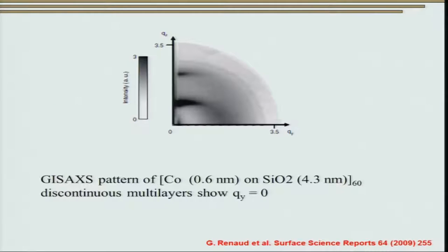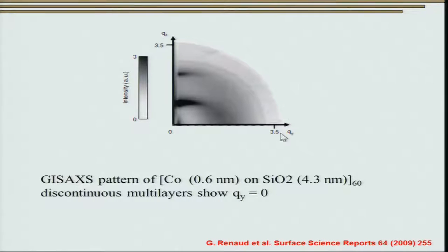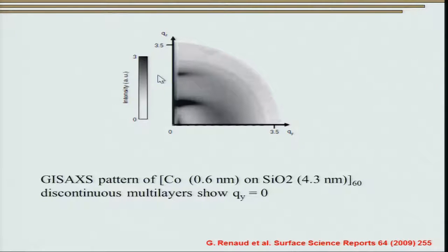An experimental result of GISAXS pattern of cobalt 0.6 nm on silica 4.3 nm — 60 such discontinuous multilayers — shows Qy equal to zero and nice Bragg diffraction peaks along Qz corresponding to cobalt. From this reciprocal space data — in units of inverse nanometers — we can find out what the period of the film is.